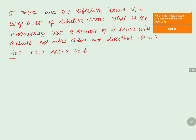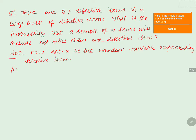In order to solve the problem, we will assume that let capital X be the random variable representing defective items. Here we take p equals to five percent, that is five by hundred, which equals to one by twenty. Since p plus q equals to one, we get q equals to one minus one by twenty, that is equals to nineteen by twenty, which can also be written as ninety-five by hundred.